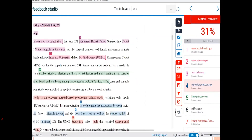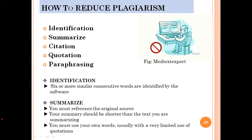Once you see that you have, say, 31% similarity, you need to reduce it to below 20% before submitting the final report. To reduce plagiarism in your submission, there are several key techniques to keep in mind: identification, summarizing, citation, quotation, and paraphrasing. For the identification step, you can identify matching sources, then rephrase and paraphrase the matching sections, or put proper citation.